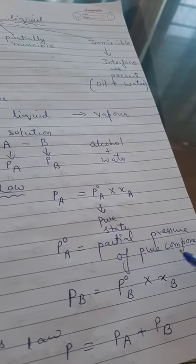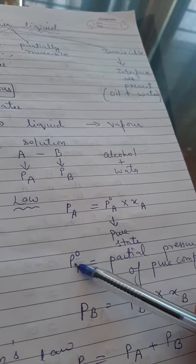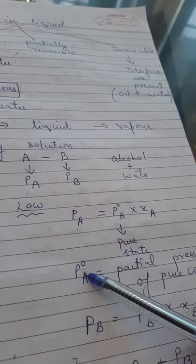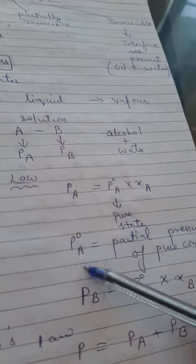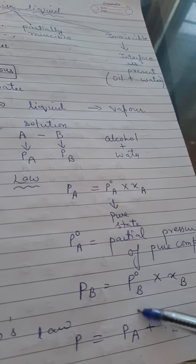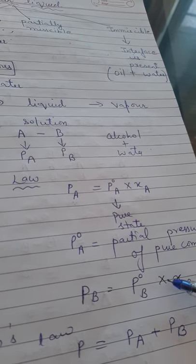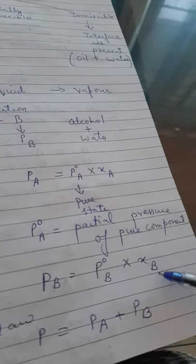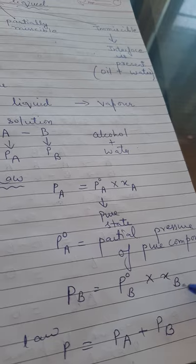Similarly, PB is equal to P0B into XB, just like we wrote for PA. P0B into XB. What is XB? Mole fraction of component B. As we have studied in grade 11, Dalton's law.